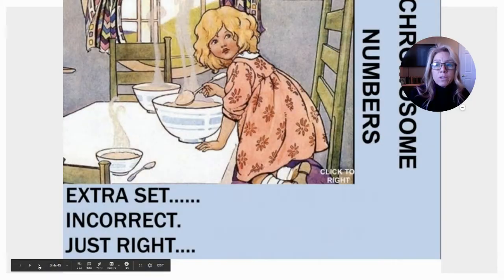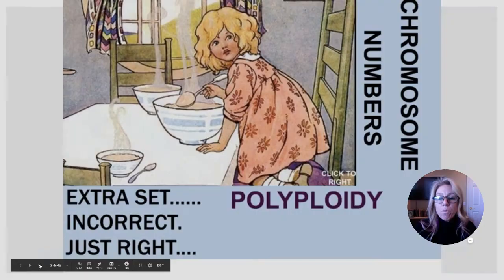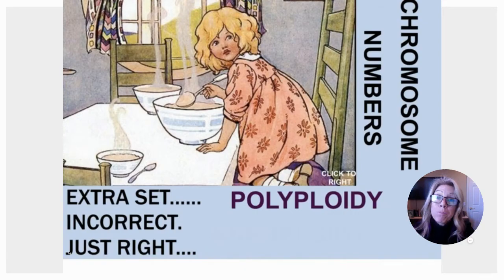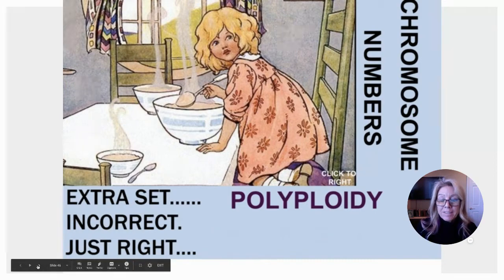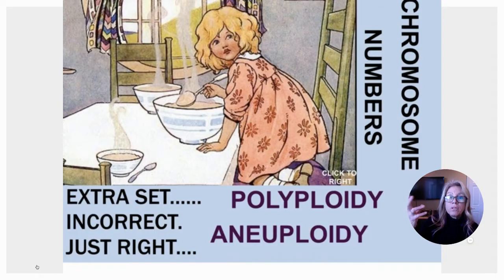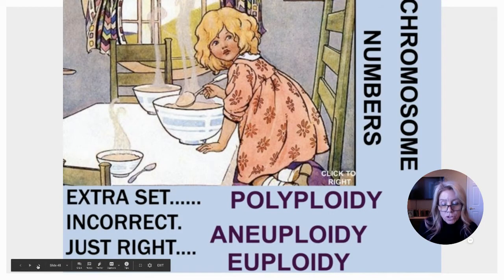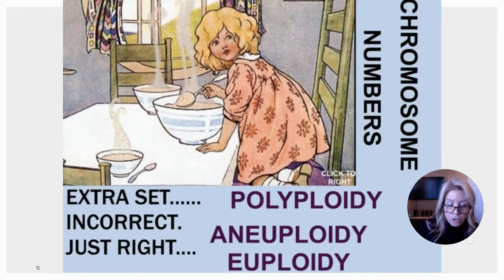When talking about chromosome numbers, if you have one whole extra set of chromosomes, that's called polyploidy. We don't survive if we form a polyploid, though plants sometimes can — and their fruit can actually be bigger, which is selected for. Aneuploidy is having an incorrect number — either extra chromosomes or not quite enough. Euploidy is what you're after: that's the correct number of chromosomes.